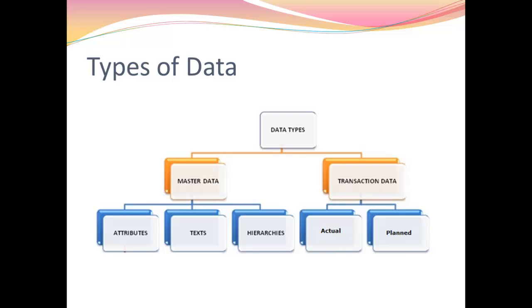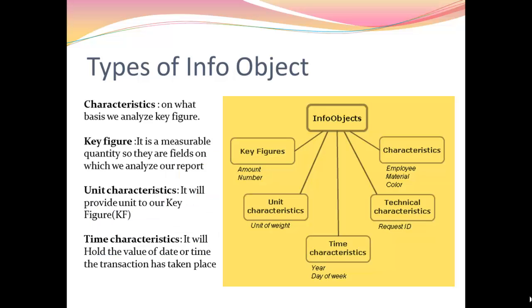Now we will have a look at types of info object. In all there are five types of info object. The first one is Characteristics. It defines on what basis we will be analyzing our key figures. Examples include employee, material, or color - things on which we will be analyzing the key figures.